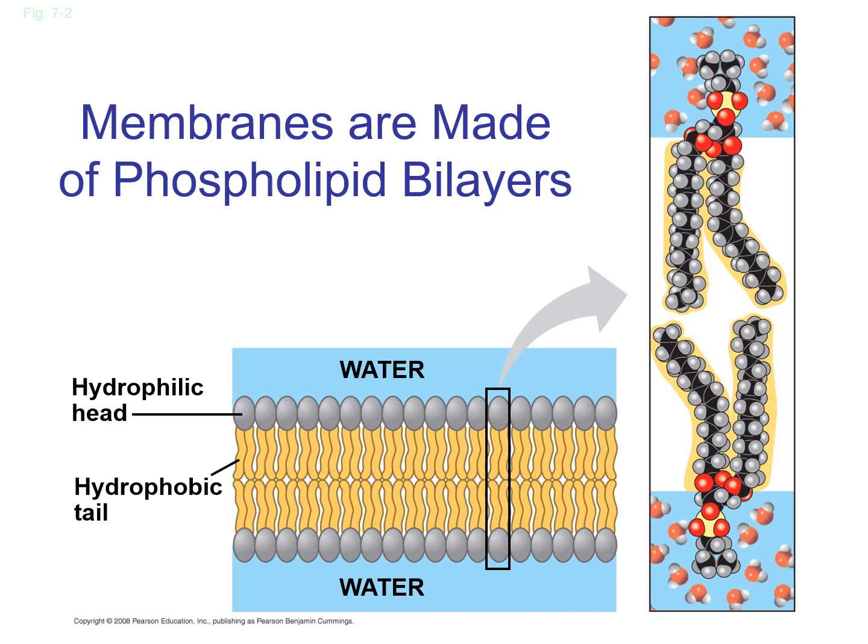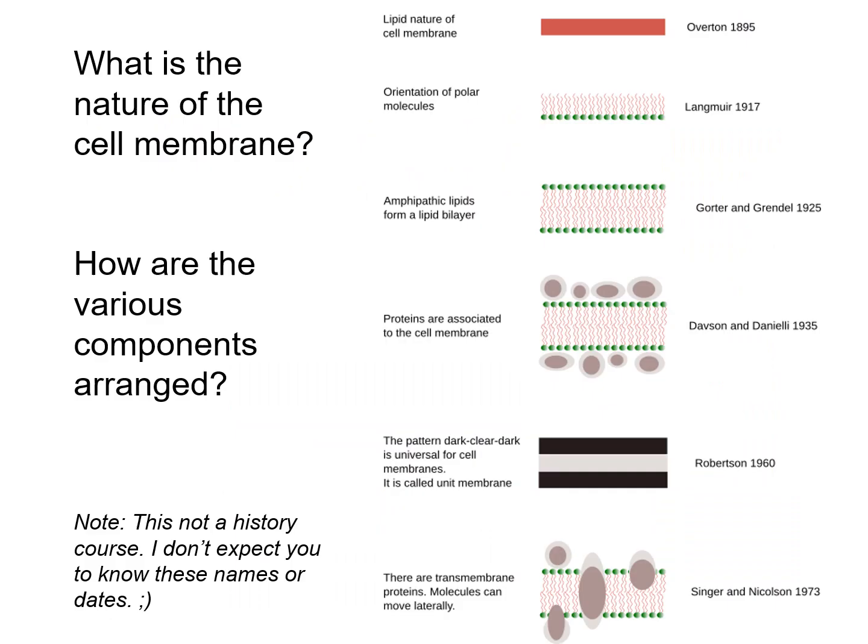We know today that membranes are made up of phospholipid bilayers — the interior is hydrophobic and the hydrophilic heads interact very strongly with water. As early as the 1880s and 1890s it was realized that lipids were a major component of the plasma membrane. Later, researchers discovered that proteins were also quite important, but it took a while for people to work out how those different bits and pieces were put together.